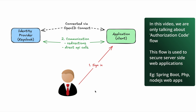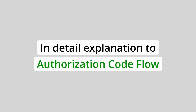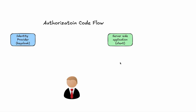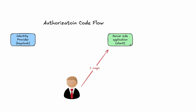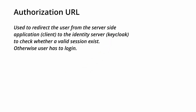The authorization code flow is a redirection-based implementation used to secure server-side web applications, including those built with Spring Boot, Node.js, and PHP. As the first step, the user initiates the login flow by hitting the login endpoint of the server-side application, which is called the client. The client then redirects the user to the identity provider via a special URL called the authorization URL.